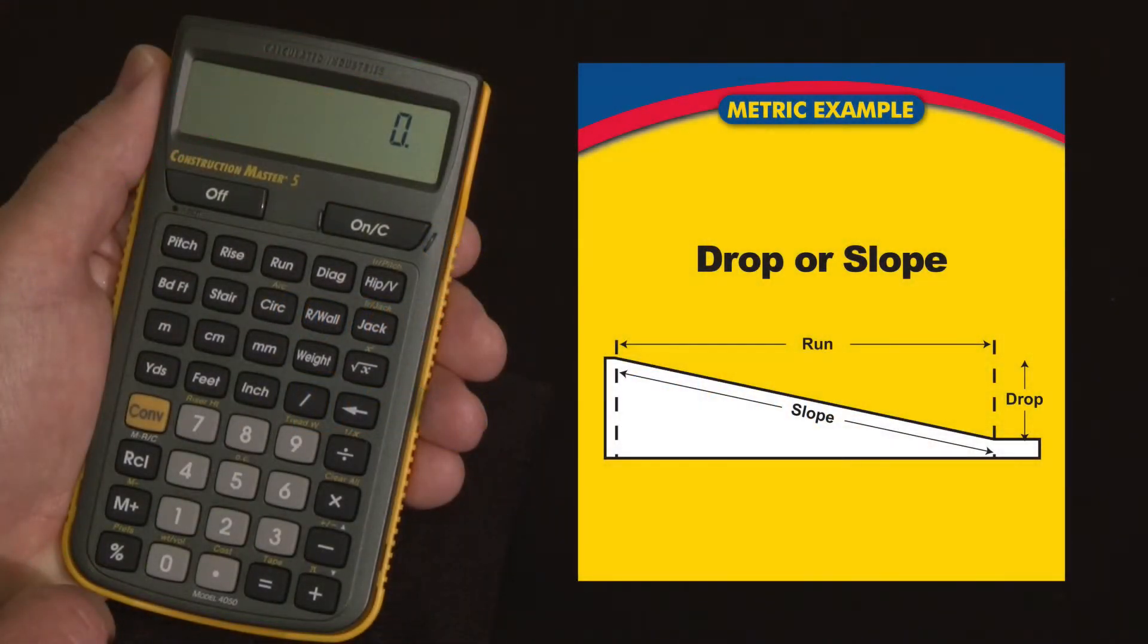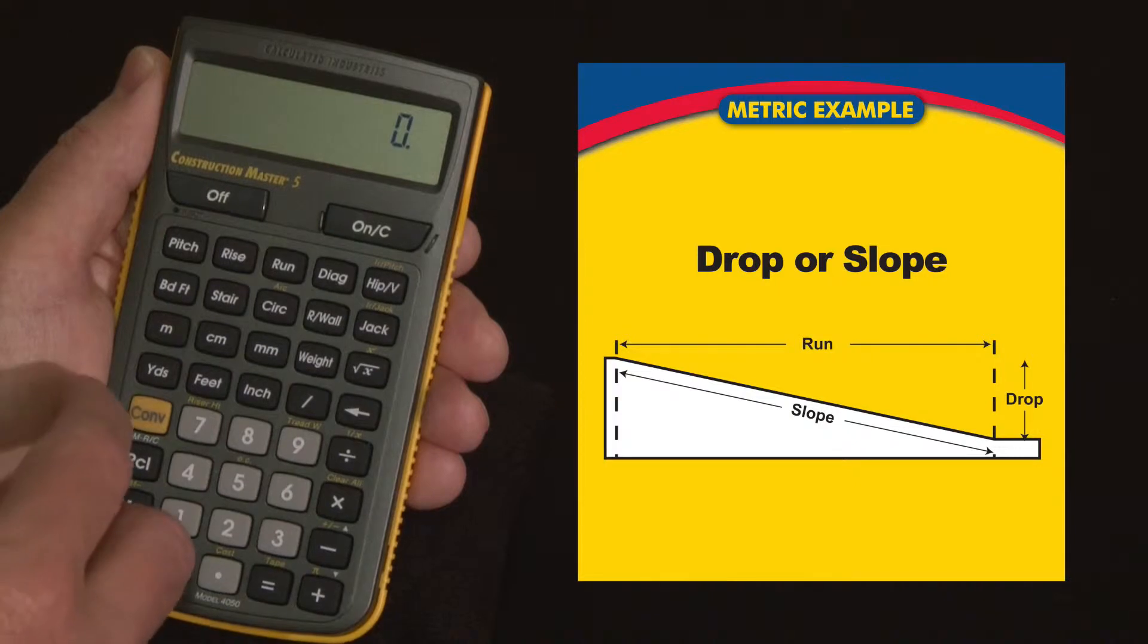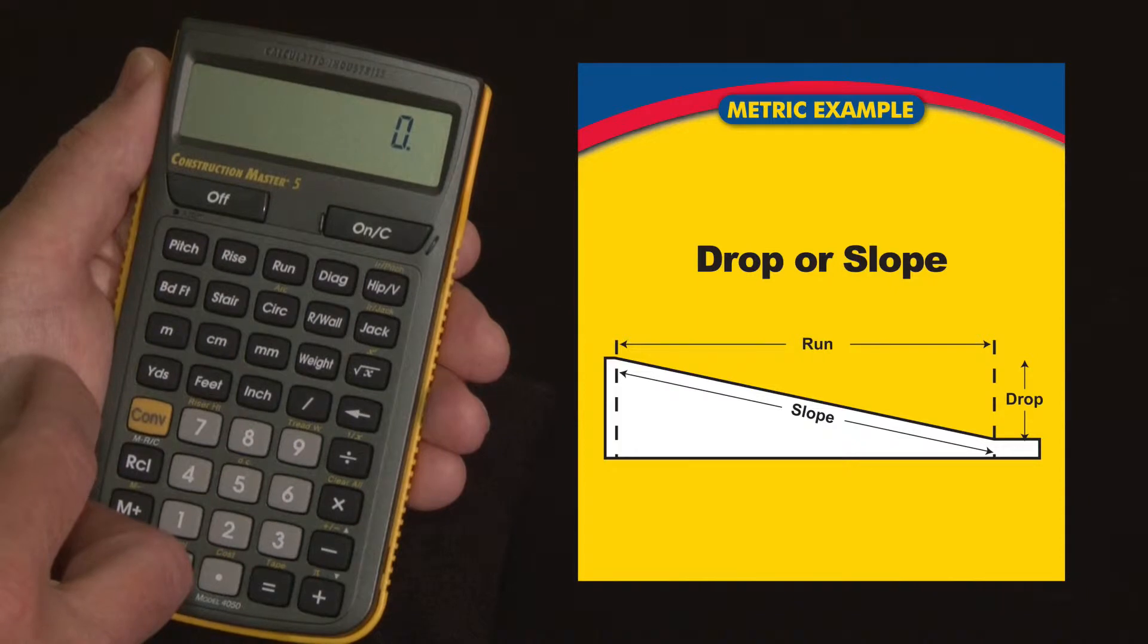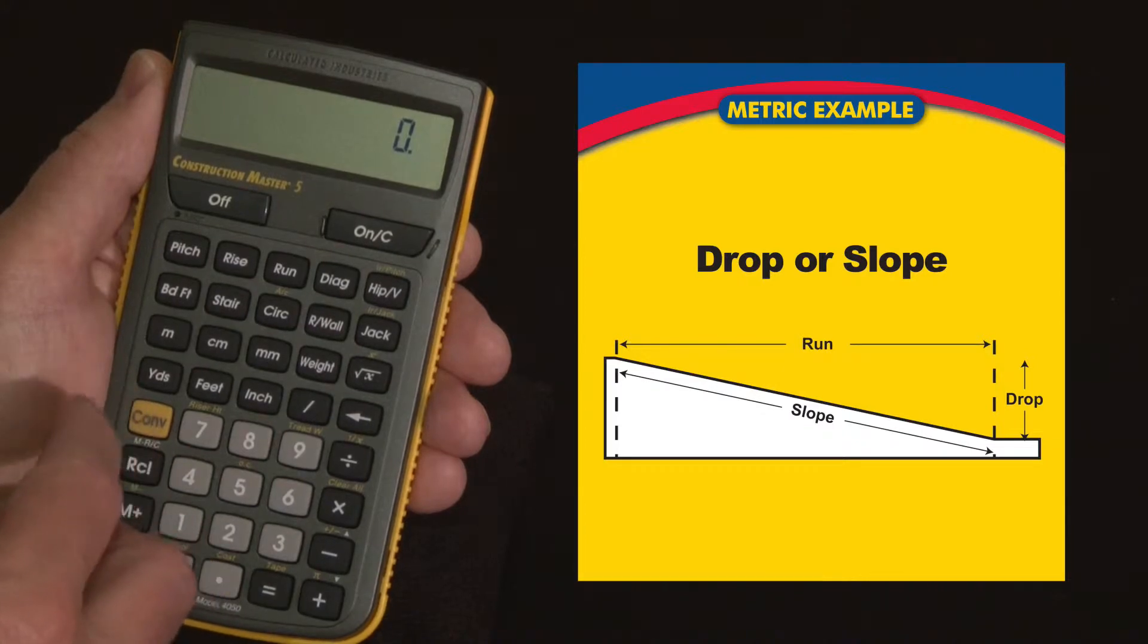Now let me show you how the Construction Master 5's right angle solution keys can help you find the drop or fall or slope of a pad or a driveway. In the states we use a measure like a quarter inch per foot or an eighth inch per foot kind of ratio, but in metric countries you use unitless ratios like a 1 to 60 or a 1 to 80 ratio with the rise or the drop over the run.